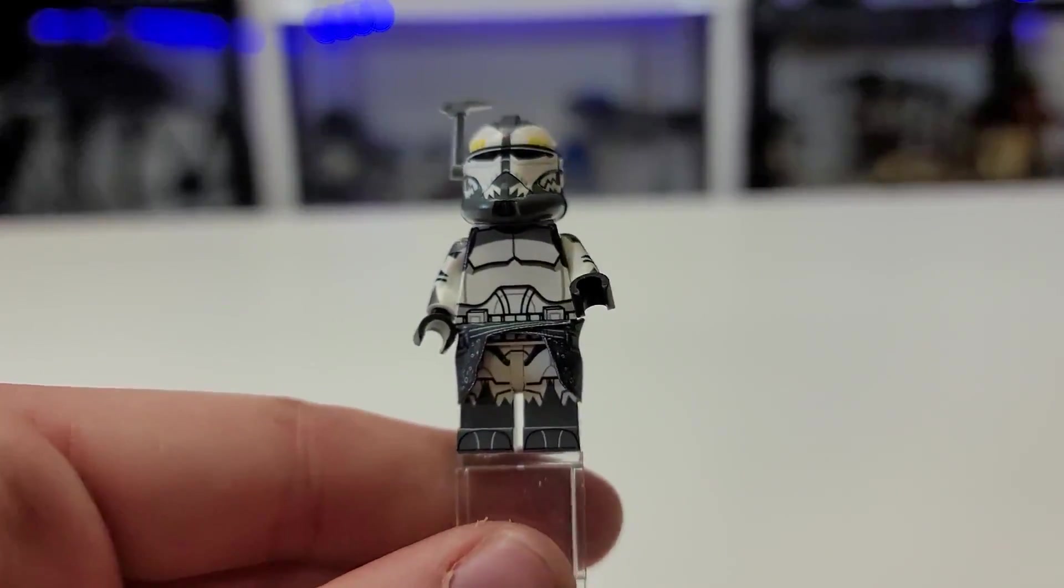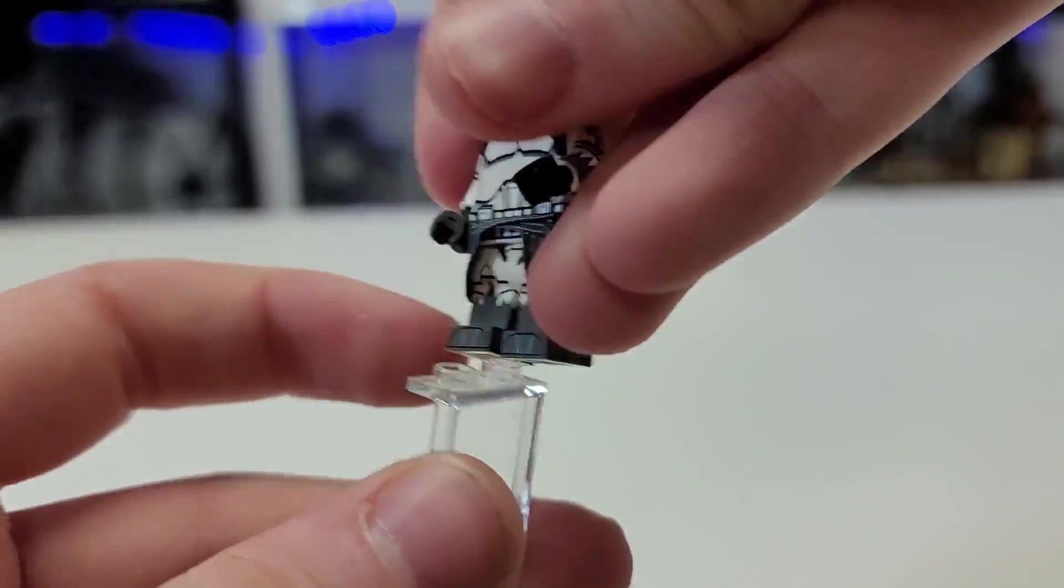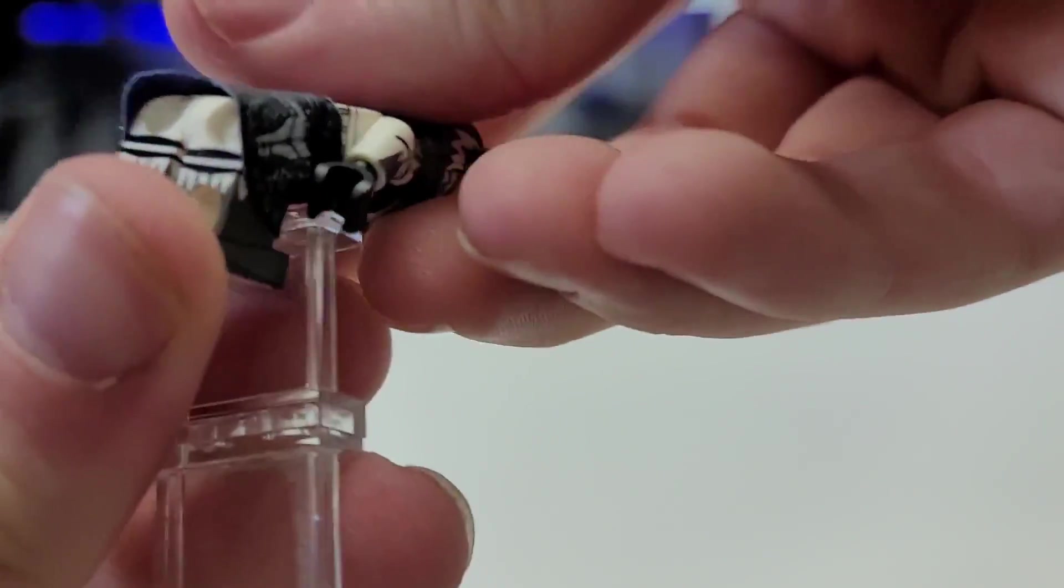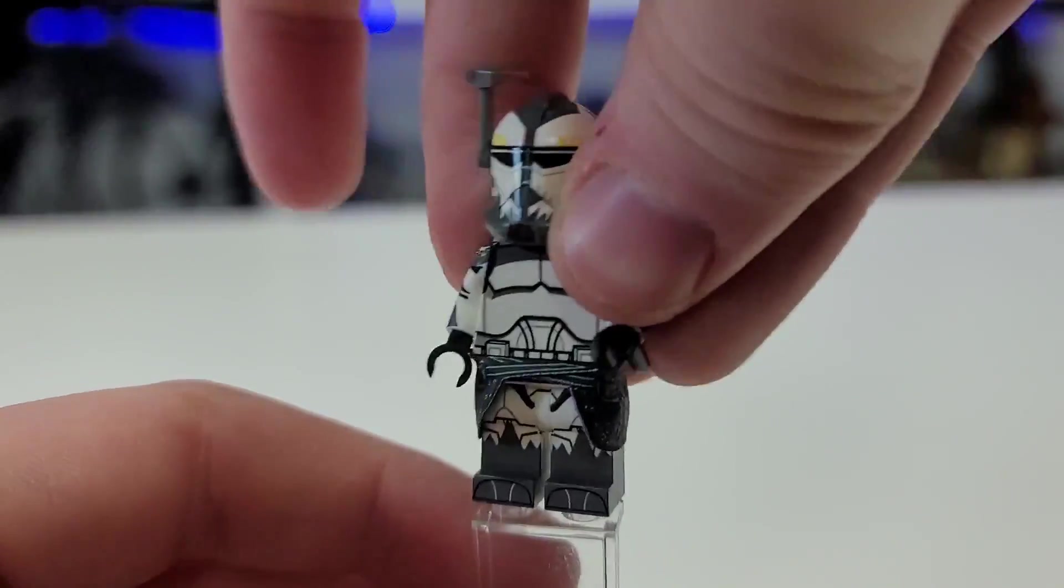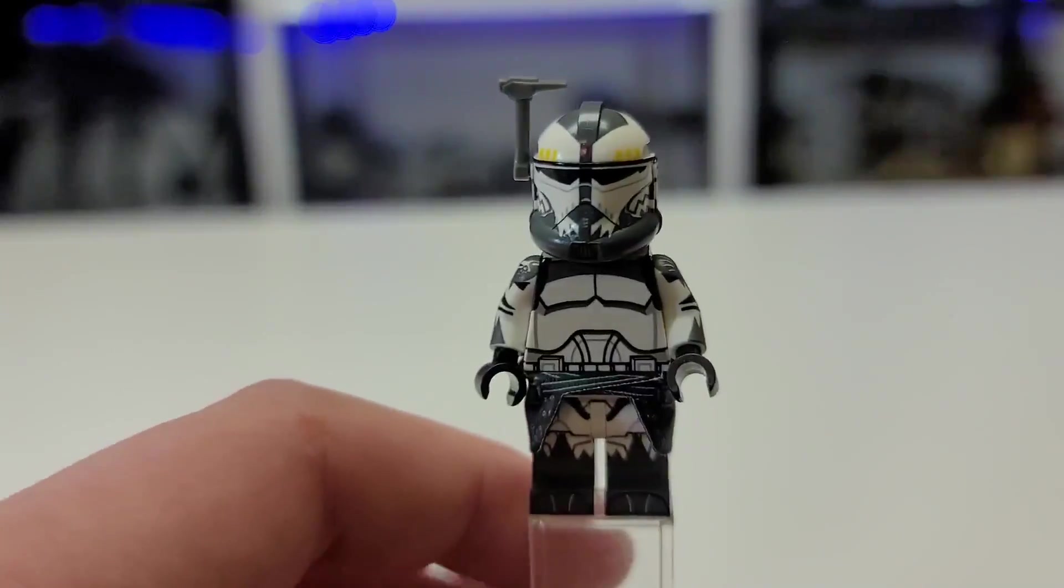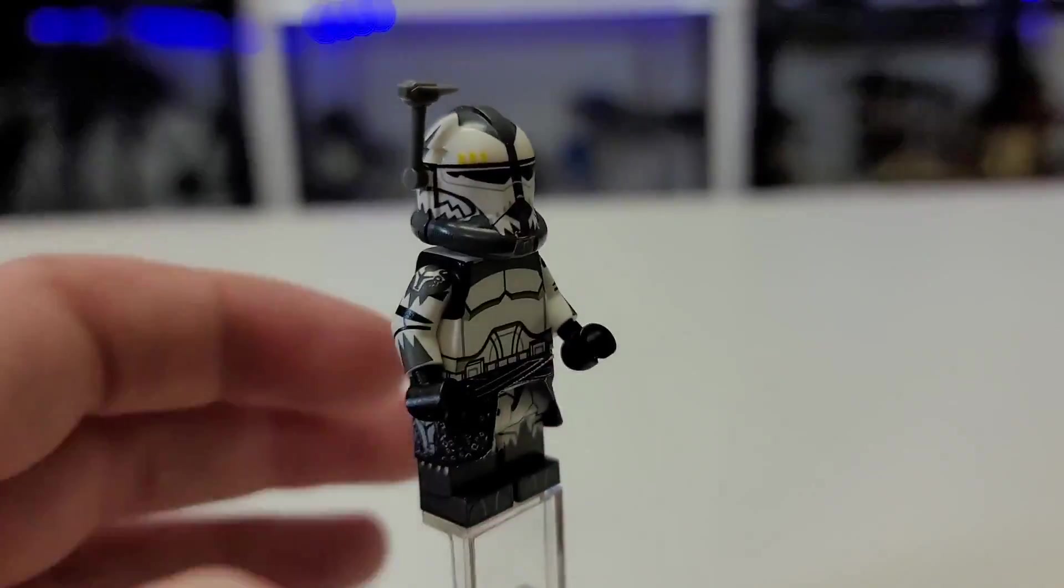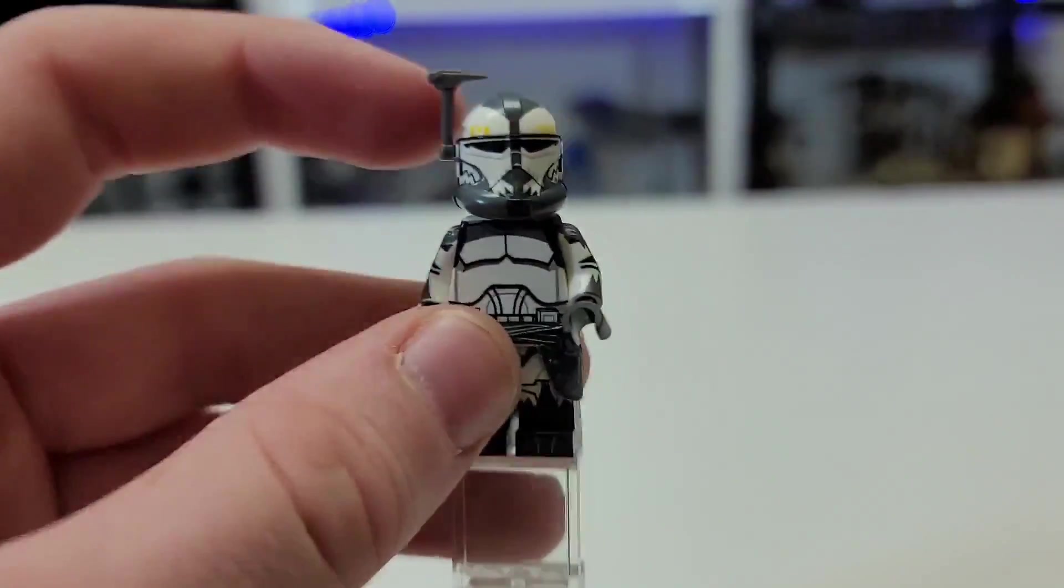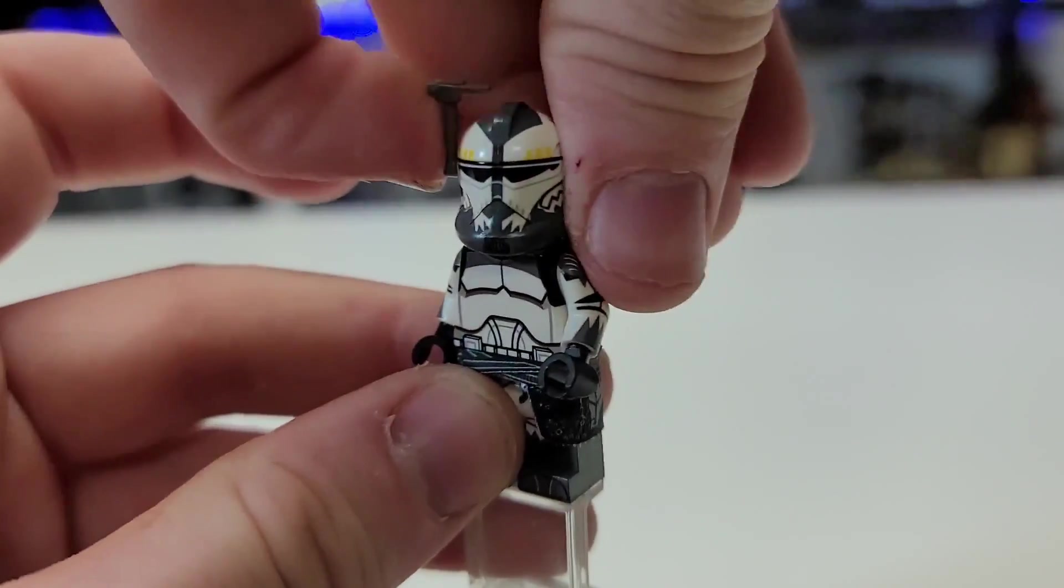So first off, you get the beautiful toe printing as per usual. With Clone Army Customs, you get all the nice leg printing. I cannot say enough nice words about CEC. Then you get the torso, which looks all nice and dandy. I love the arm printing. Obviously, you get the Wolfpack for Dave Filoni, my guy. And then you get the Commander Wolf, obviously with his little antenna piece, which you have to get separately.